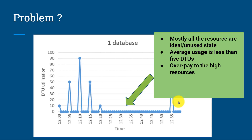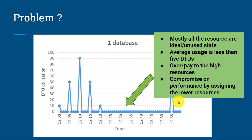It means that I am overpaying by assigning high resources. This is problem number one. Problem number two: if you assign lower resources, you compromise with the performance. Now these two problems you can resolve in an elastic pool.